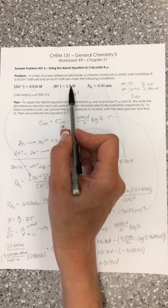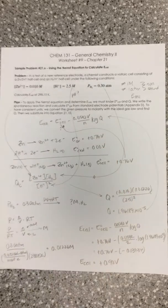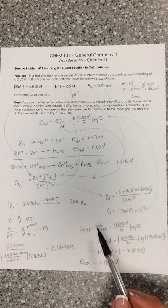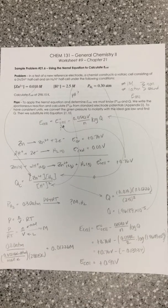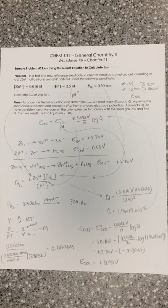If we had a situation where we reversed these and made our Q greater than 1, we would have a situation where we would actually have an E cell that's smaller than the standard value that we would have at 1 molar.